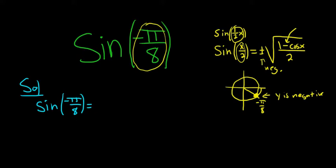The next step is to write negative π over 8 as 1/2 x. So this is sine of 1/2, and now we have to figure out what x is.